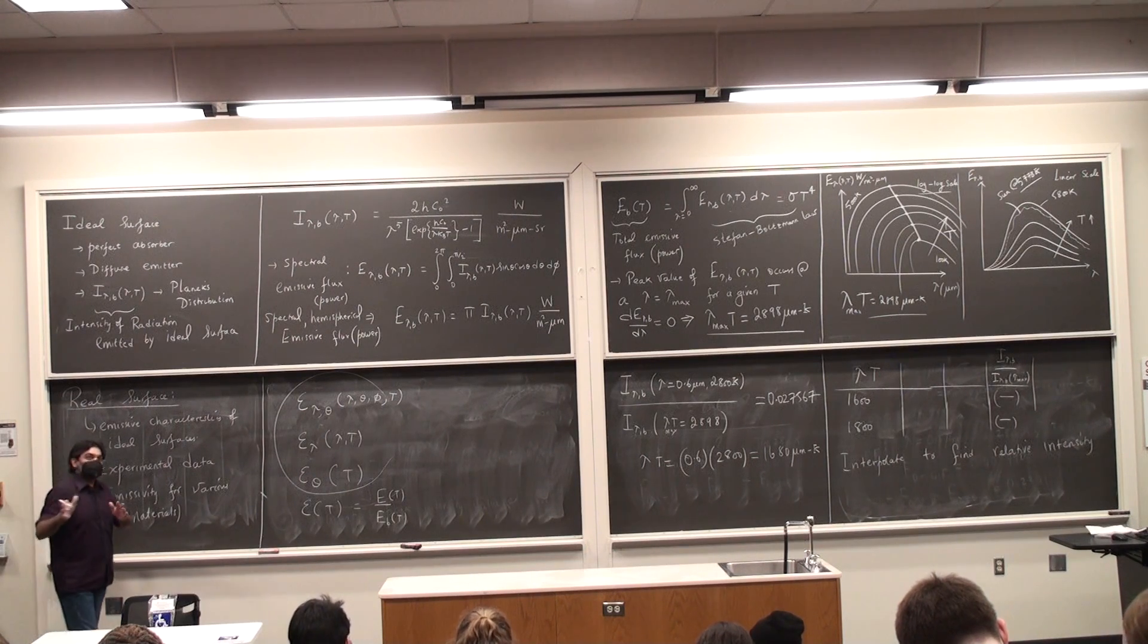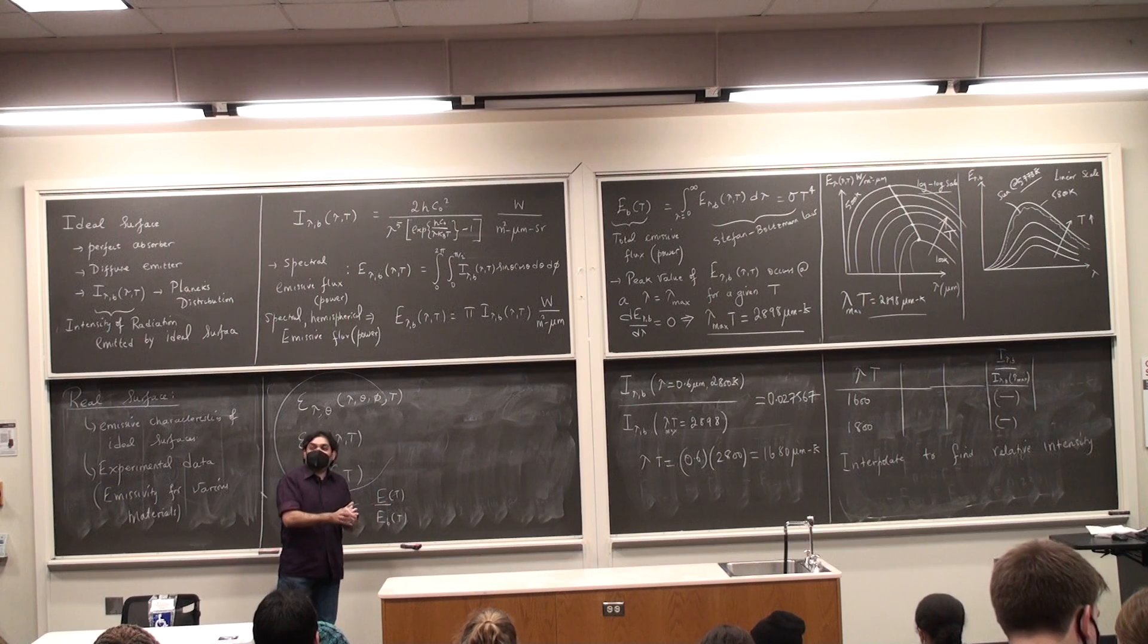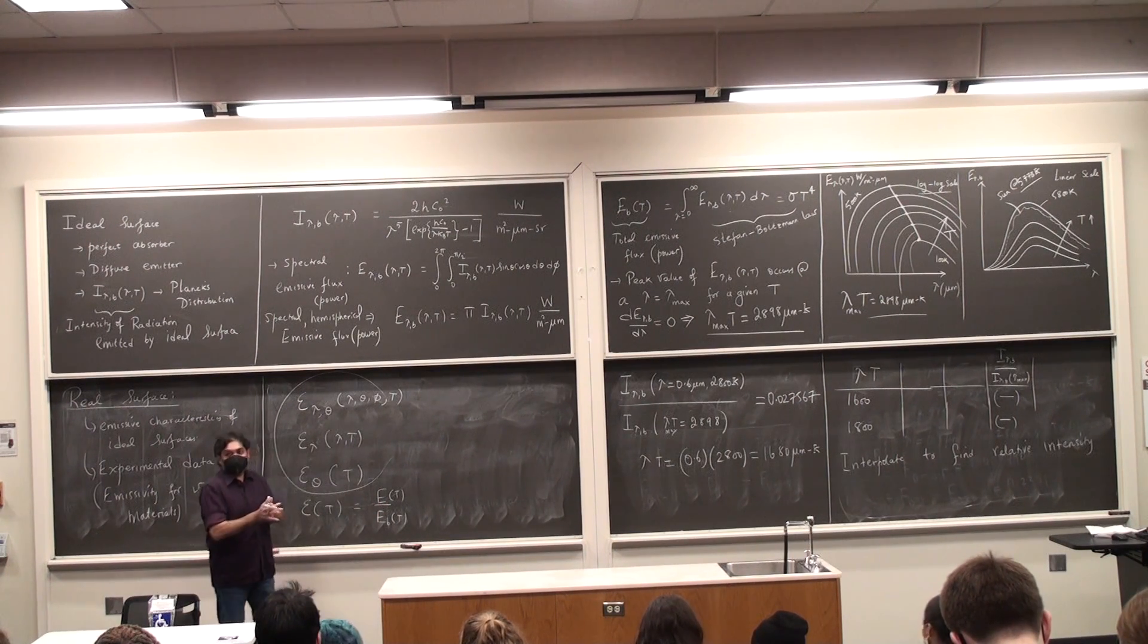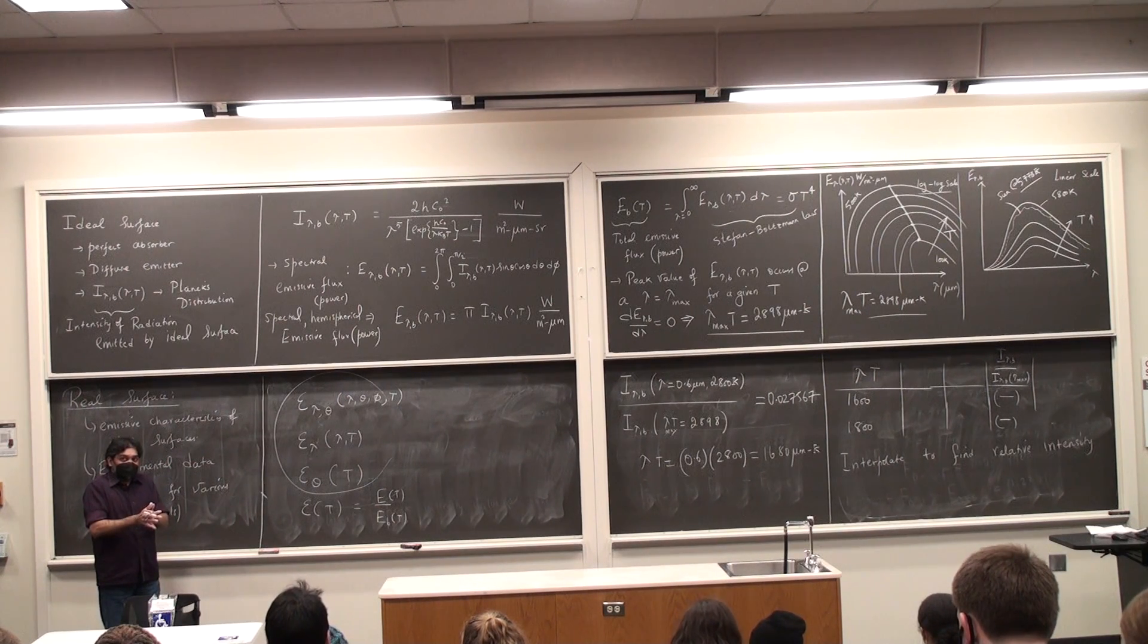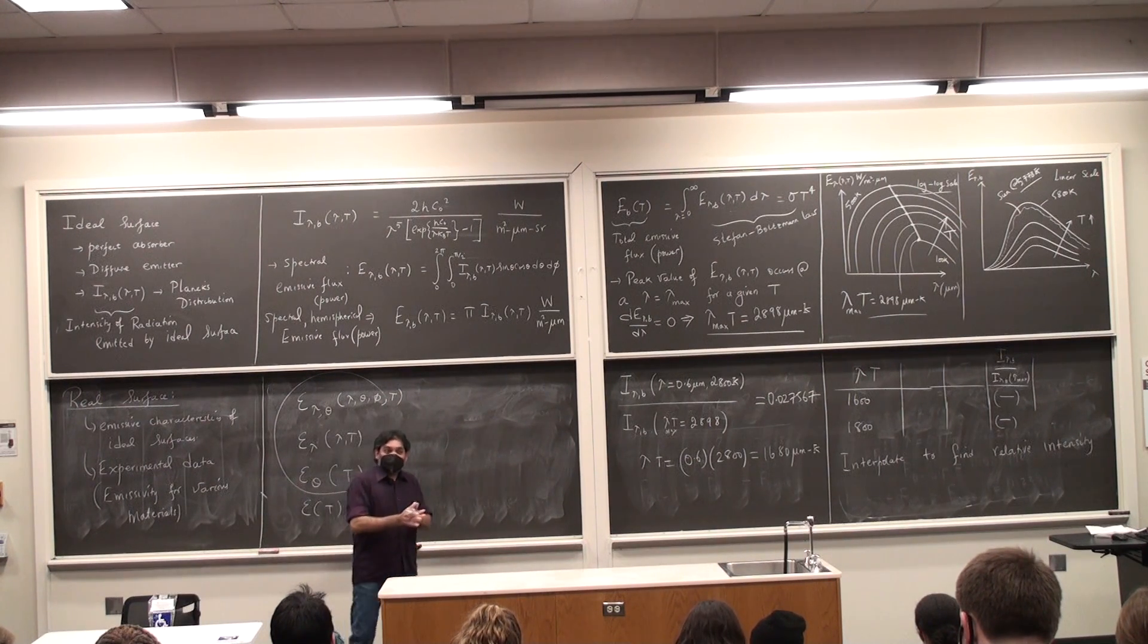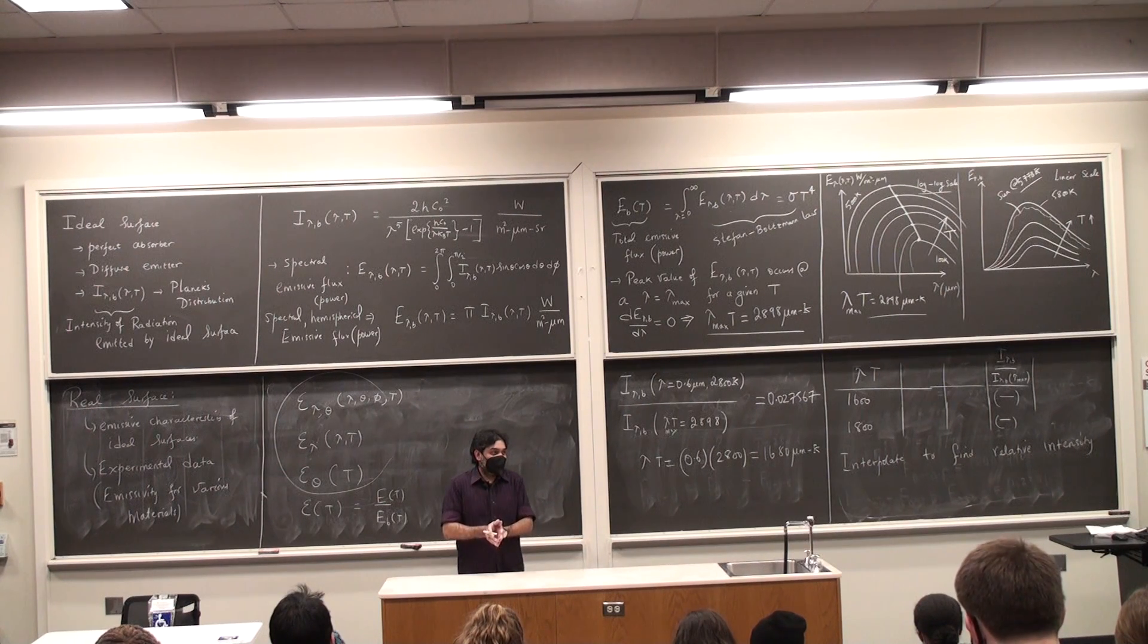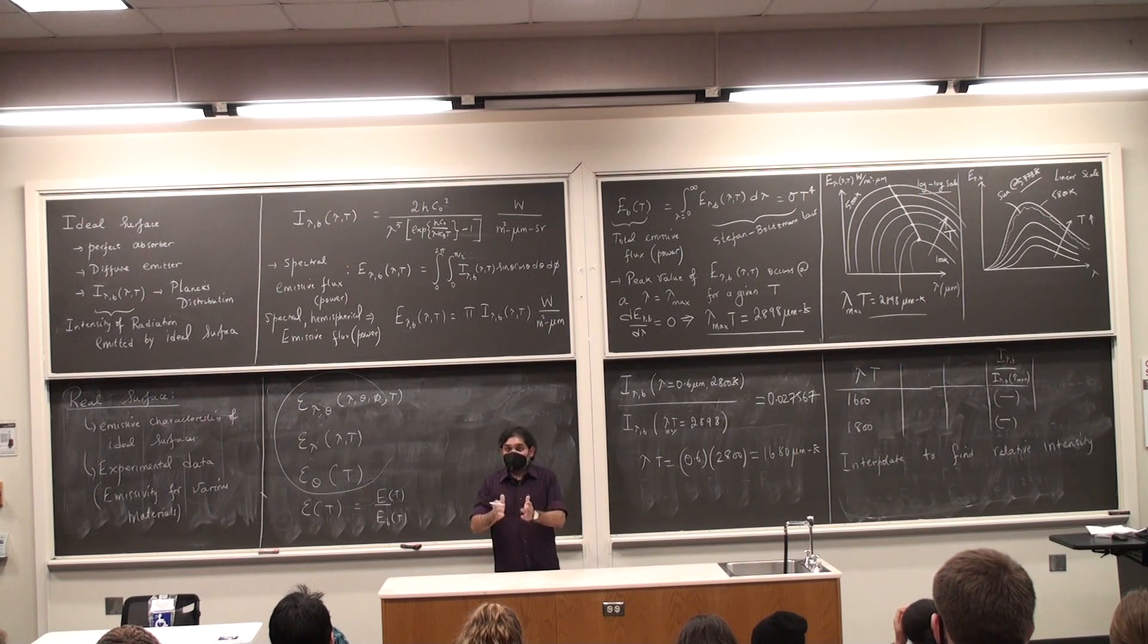And the great news is we don't need to redo any of these things for absorptivity. It is exactly the same idea, the same set of equations, just call epsilon as alpha. Once we do that, we will then do the last approximation for radiative heat transfer which is the gray surface. That is for certain surfaces we mentioned that alpha and epsilon are the same.